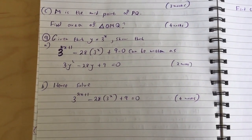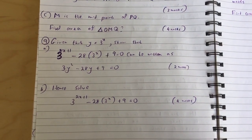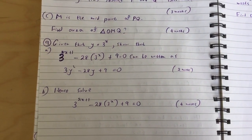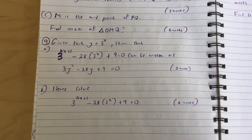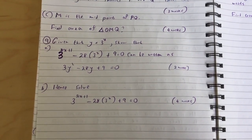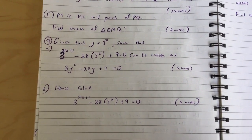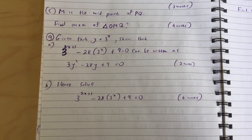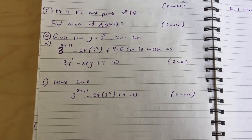Question 9: Given that y equals 3 to the x, (i) show that 3 to the 2x plus 1 minus 28 times 3 to the x plus 9 equals 0 can be written as 3y squared minus 28y plus 9 equals 0. (ii) Hence solve 3 to the 2x plus 1 minus 28 times 3 to the x plus 9 equals 0.